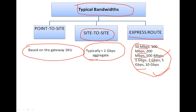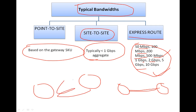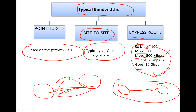ExpressRoute always has more bandwidth because it is not an internet connection — it does not go over the internet. It is a direct private line, so internet plays no role here. But for Point-to-Site and Site-to-Site, the internet comes in between. Because it is a private line, ExpressRoute can support up to 10 Gbps.